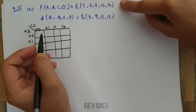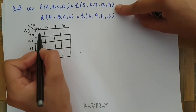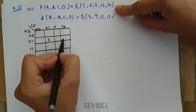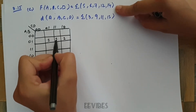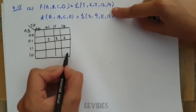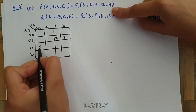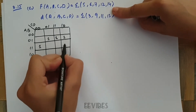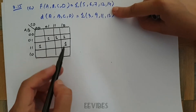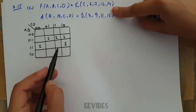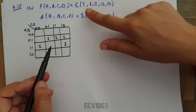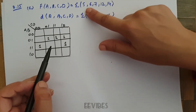Once you have constructed the K-map, the next step is to place ones in place of the minterms where the function value is equal to one — minterms 5, 6, 7, 12, and 14. I have placed ones in the boxes where the minterms are specified by the function.